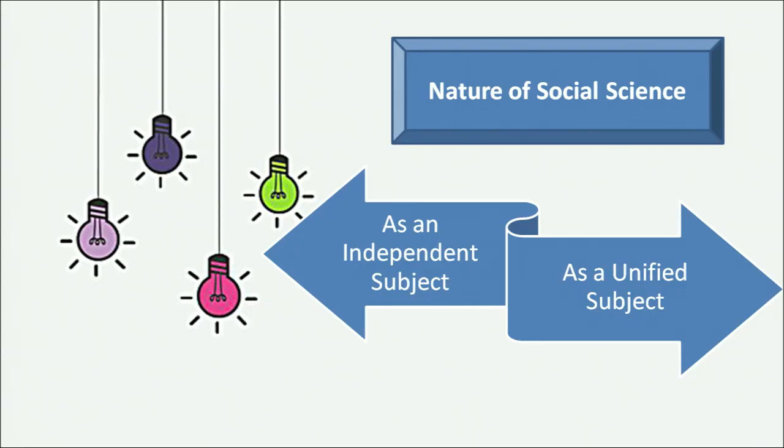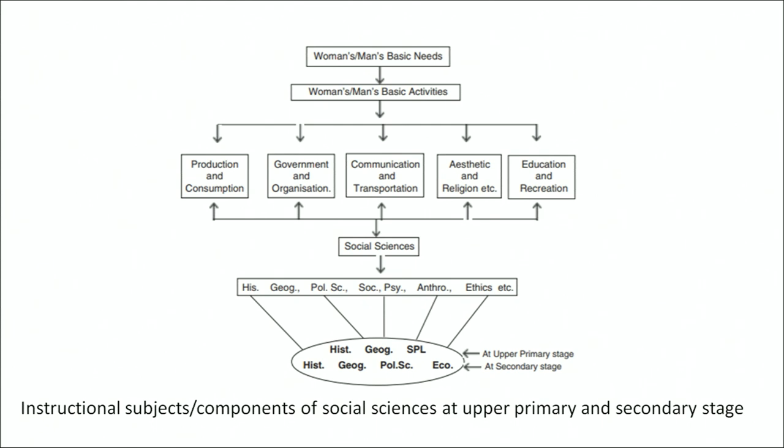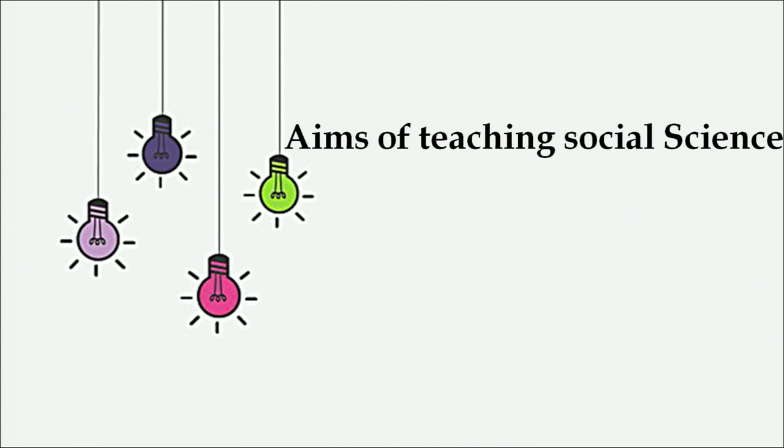The nature of social science can be explained as both an independent subject and a unified subject. As an independent subject, social science includes all kinds of human beings, society, and their surroundings. As a unified subject, it covers mankind's history, geography, political science, anthropology, and education. At the upper primary stage it includes history, geography, and political science, and at the secondary stage also includes economics. Now we will discuss the aims of teaching social science.